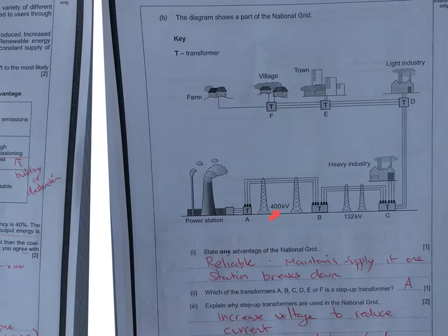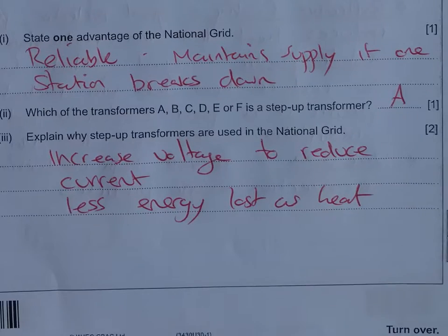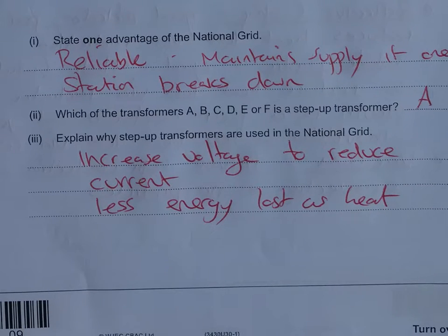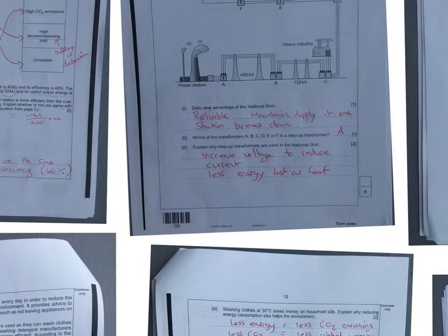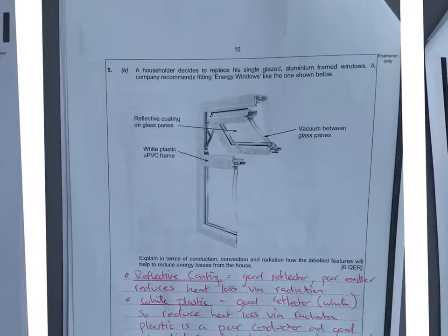Which transformer is the step up? You can see the power station starts by here and it goes around this way. So the highest the voltage is is 400 kilovolts there, and then it's always step down from there on, so the step up transformer must be A. And what does it do? It increases the voltage to reduce the current, and that means less energy lost as heat.